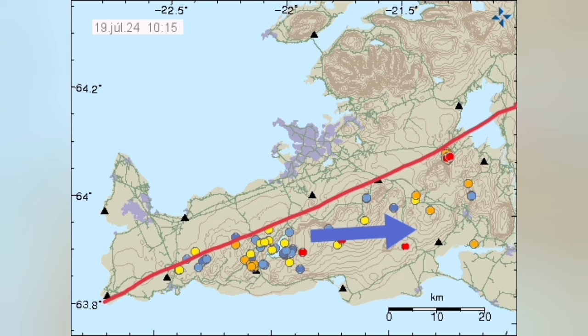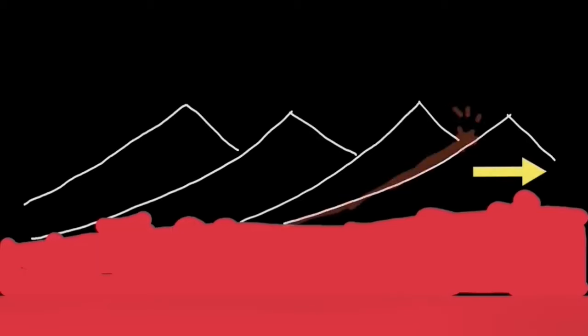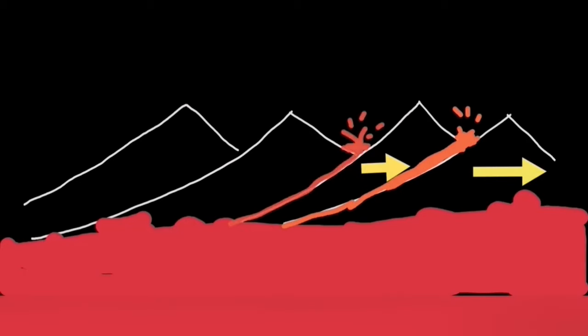As it moves and pulls, it practically rips the ground — the earth's crust — and creates what we call a rift. This rift is the location of these eruptions. Over time, as this rift moves and rips from one point to the next, eruptions happen in sequence — from the first to the second and the third.